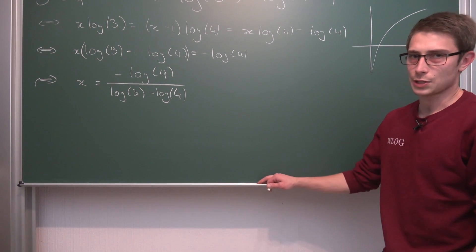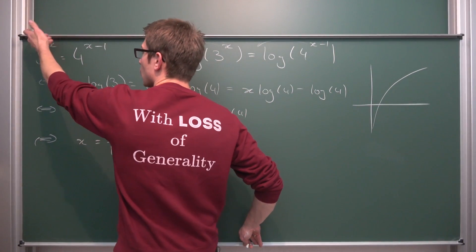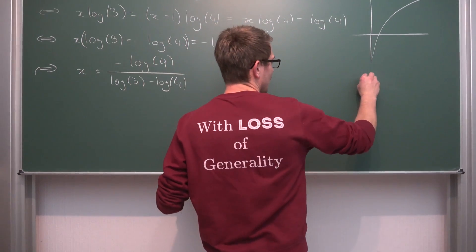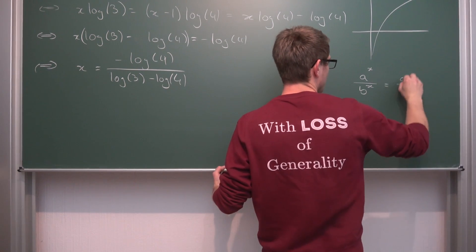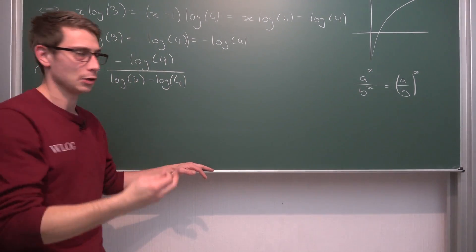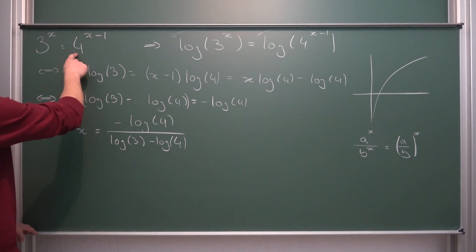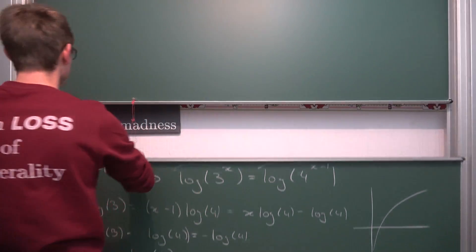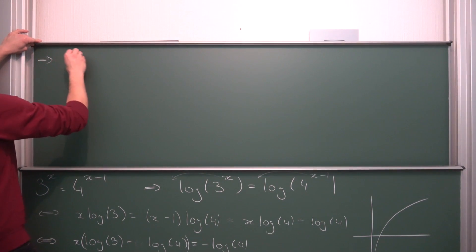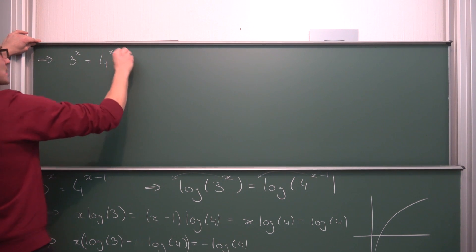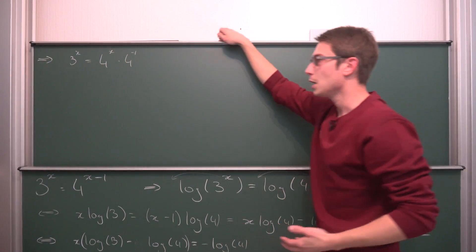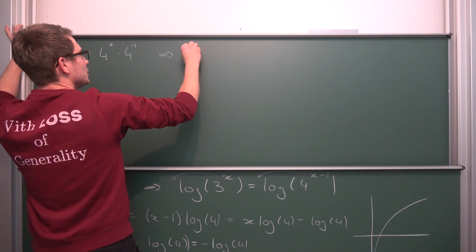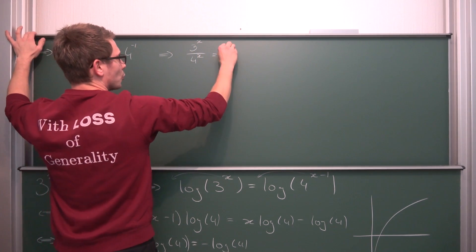There's also another way to do this. We note that 4 to the x minus 1 is the same as 4 to the x times 4 to the negative 1, or one quarter. So if we rewrite this, we get 3 to the x equals 4 to the x times one quarter. Now we can divide both sides by 4 to the x — it's obviously not equal to 0 for any real x — meaning we get 3 to the x power divided by 4 to the x power equals one quarter, or 4 to the negative 1.